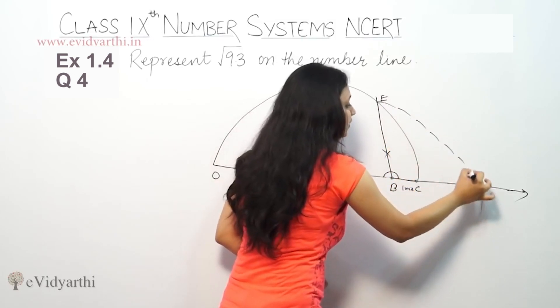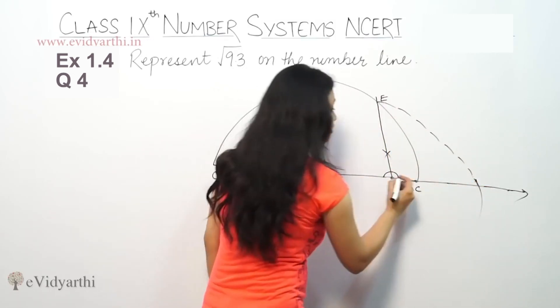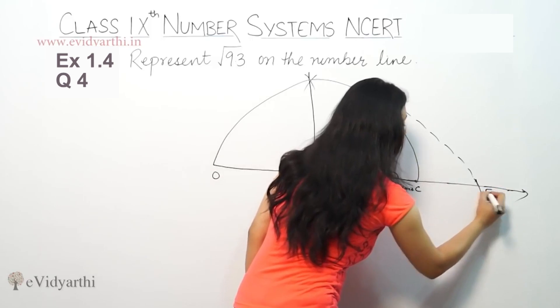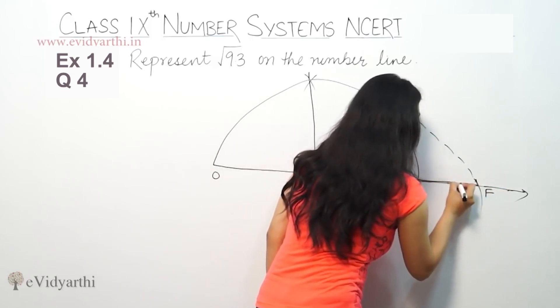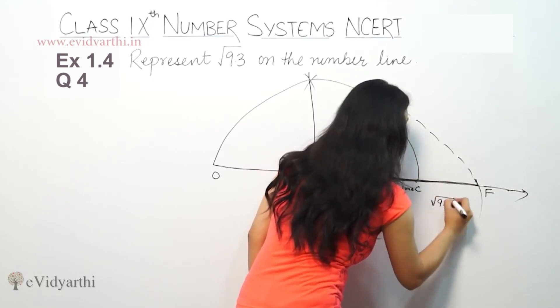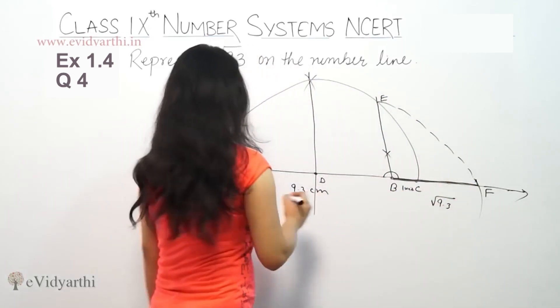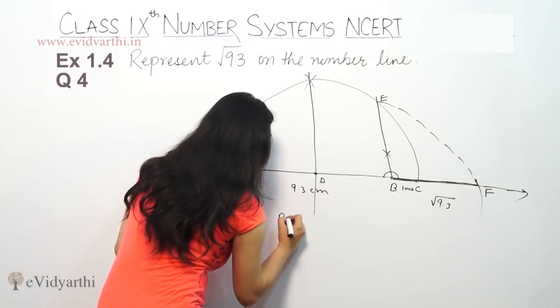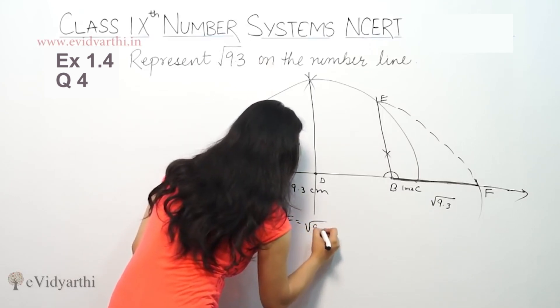So join this here. Suppose this is point F, so from B to F, the portion you have, this portion BF is root 9.3. So basically BF is root 9.3.